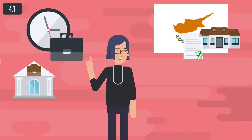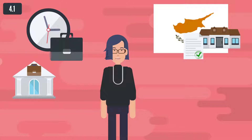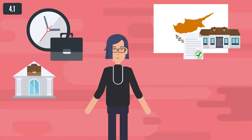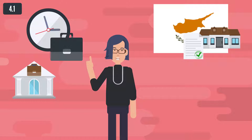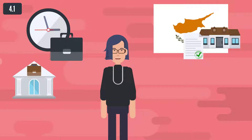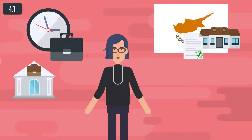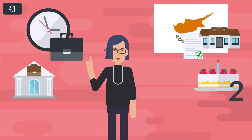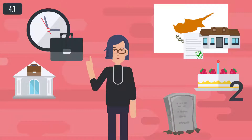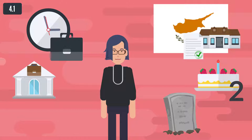If, however, the employee or self-employed person dies while still working but before acquiring permanent residence status in Cyprus on the basis of this law, Article 14(1), his family members who are residing with him in Cyprus shall acquire the right to permanent residence on the condition that: I. The employee or self-employed person had, at the time of death, resided continuously on the territory of Cyprus for two consecutive years; or II. The death resulted from an accident at work or an occupational disease.